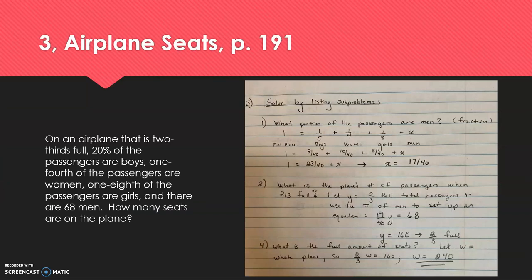It reads as follows: On an airplane that is two-thirds full, 20% of the passengers are boys, one-fourth of the passengers are women, one-eighth of the passengers are girls, and there are 68 men. How many seats are on the plane?